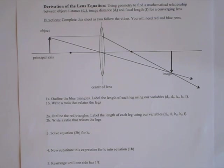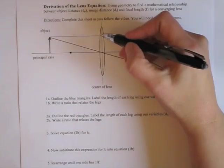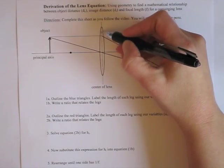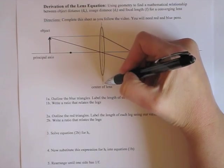This video will show how we can derive an equation that relates object distance, image distance, and focal length for a converging lens. We're starting with a ray diagram. We have our converging lens here, and the dotted line shows the center of the lens.